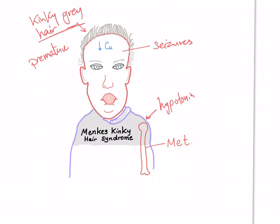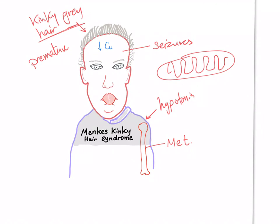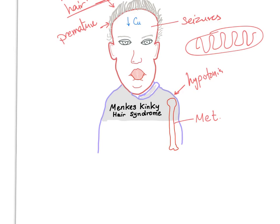Other symptoms include failure to thrive, subnormal body temperature, and developmental delay. Remember, copper is required for mitochondrial enzymes — without copper, the mitochondria cannot do its job. The hair is kinky, colorless or depigmented, steel-colored, and easily broken. We can also have neurodegeneration of the gray matter of the brain.